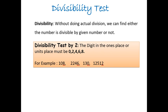Now, let us see divisibility test by 2. The digit in the 1's place or unit's place must be 0, 2, 4, 6, and 8. For example, 108. The last digit is 8. So, the number is divisible by 2.